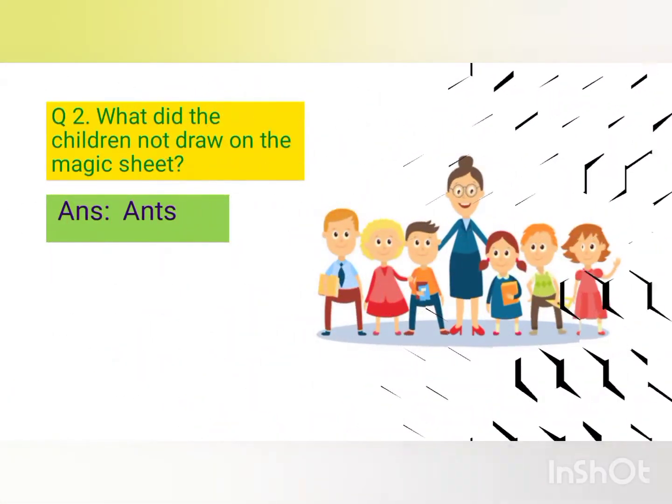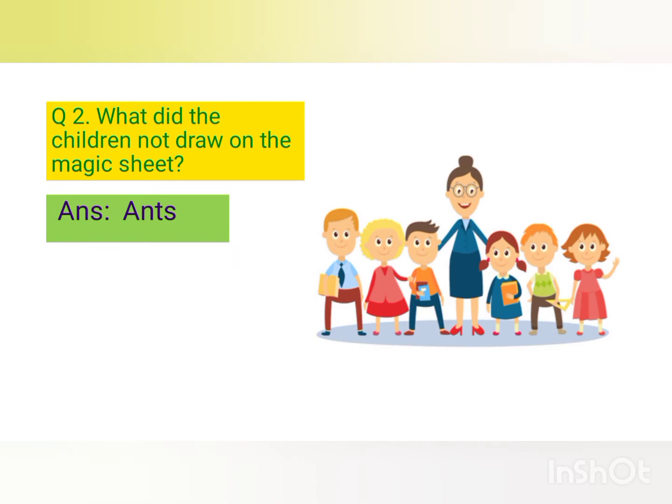The next question is: what did the children not draw on the magic sheet? When they got the magic sheet, they were very excited and started drawing different figures like hills, trees, birds, flowers, grasses, butterflies, fountains, etc., and they all came to life and jumped out of the sheet. So they did not draw ants on the sheet.